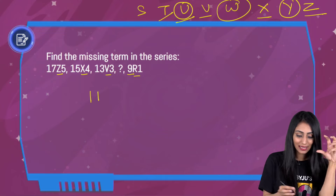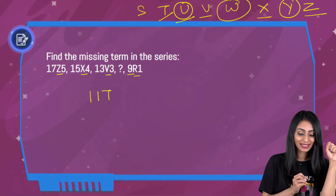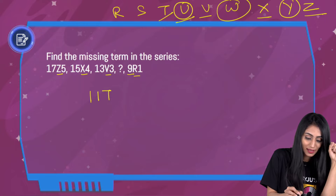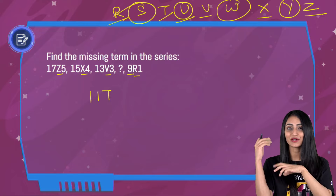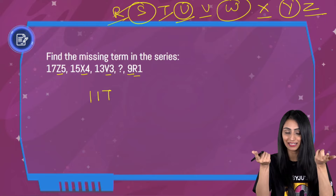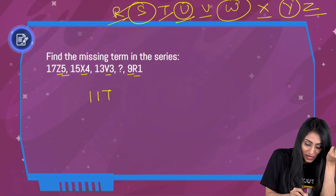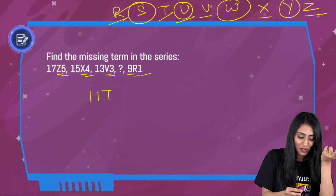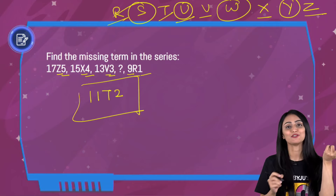So U is missing, which means T will come here. And then after T, skipping one letter, we get R — confirming the pattern. We have now figured out the letter as T. Talking about the number suffix: we have 5, 4, 3, and then 1. The numbers are consecutive, so definitely the missing number is 2. So the full answer is 11T2.